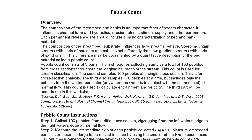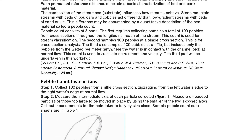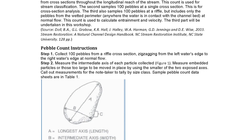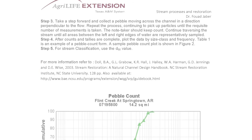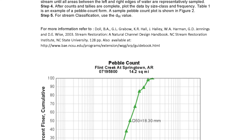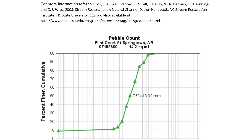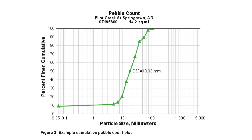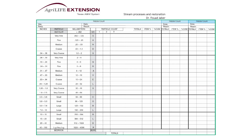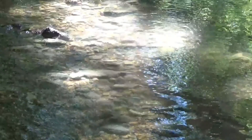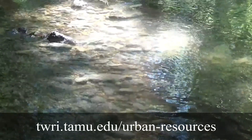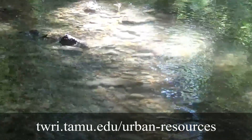Once you are done, you can take your results back and plot the data based on size class and frequency, and develop a graph of the D50 value. The D50 value is the particle size that 50% of the samples are equal to or smaller than — it is effectively the average size of your stream bed substrate. The D50 value from your pebble count is part of the whole informational picture that can help classify a stream, and that classification can help guide a restoration project. For more information on conducting pebble count analysis or help with further stream classification, please visit twri.tamu.edu/urban-resources.